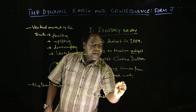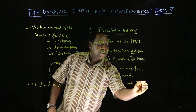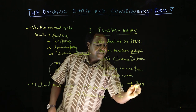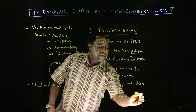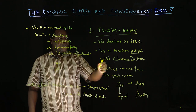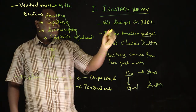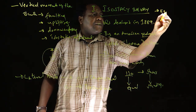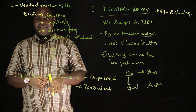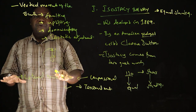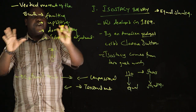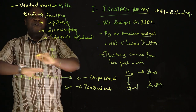Isostasy comes from two Greek words: 'isos' and 'stasis.' The word 'isos' stands for equal, and 'stasis' stands for standing or standing still. These two words give the English meaning 'equal standing.' Therefore, the earth is standing equally with all its major landforms — with all its mountains, with all its lowlands, with all its flat surfaces.